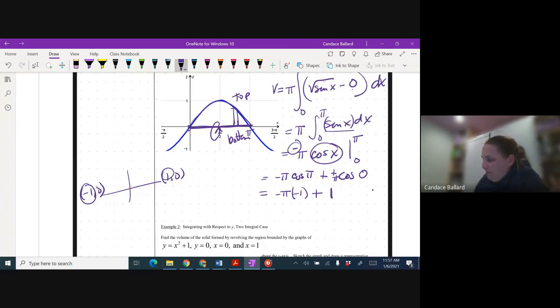Negative times negative is positive pie plus one. And that should be what did I do wrong? I didn't get the right answer. I lost a pie here. See that pie? I lost that pie. So it's one pie plus one pie, which is going to be two pie.